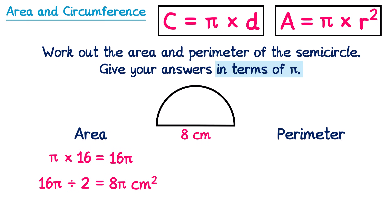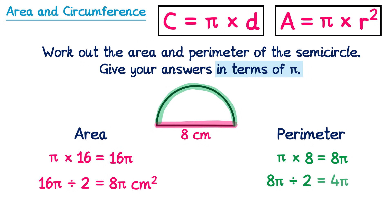For the perimeter of the semicircle: it's made of a straight part of 8cm, and a curved part which is half the circumference. The circumference of the full circle is pi times the diameter of 8, which is 8 pi. Half of that is 4 pi. So the total perimeter is 4 pi plus 8. You can't simplify this further — you can't add 4 pi and 8 together because the 4 has a pi but the 8 doesn't. The answer is simply 4 pi plus 8 cm.